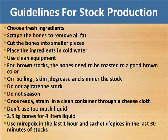Guidelines for stock production: choose fresh ingredients; scrape the bones to remove all fat; cut the bones into smaller pieces; place the ingredients in cold water; use clean equipment. For brown stocks, the bones need to be roasted to a good brown color. On boiling, skim, degrease and simmer the stock. Do not agitate the stock. Do not season. Once ready, strain into a clean container through a cheesecloth. Don't use too much liquid — 2.5 kilograms bones for 4 liters liquid. Use mirepoix in the last 1 hour and sachet de épices in the last 30 minutes of stocks.